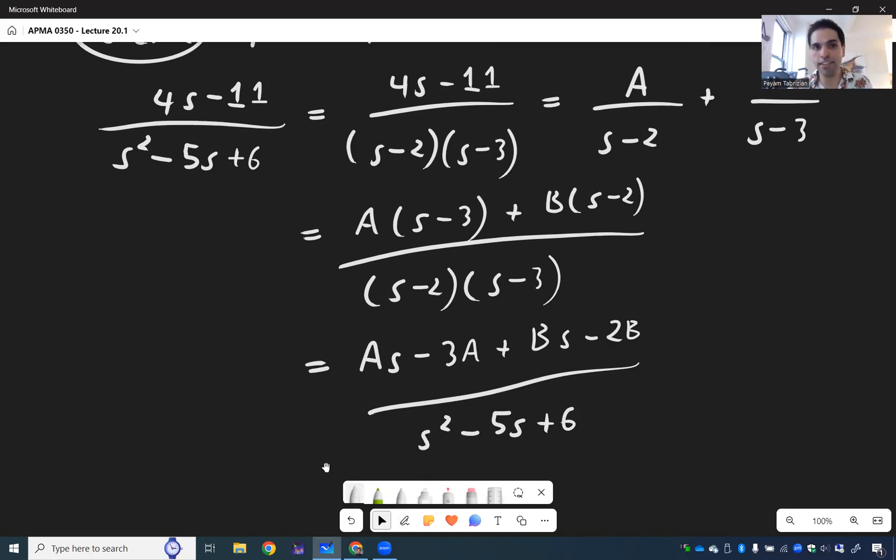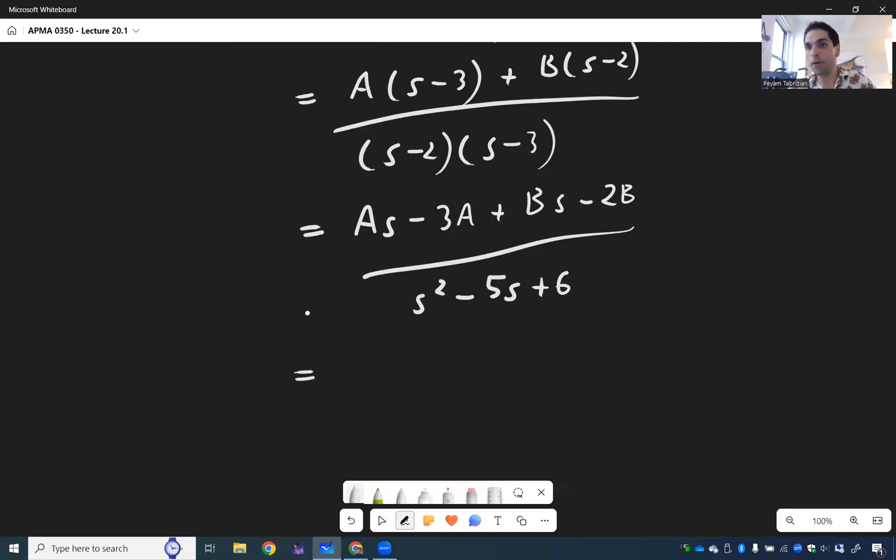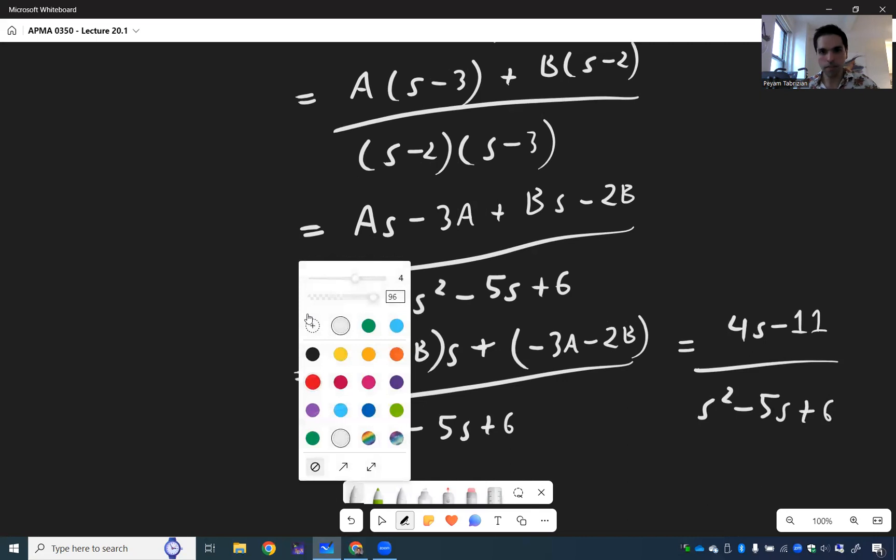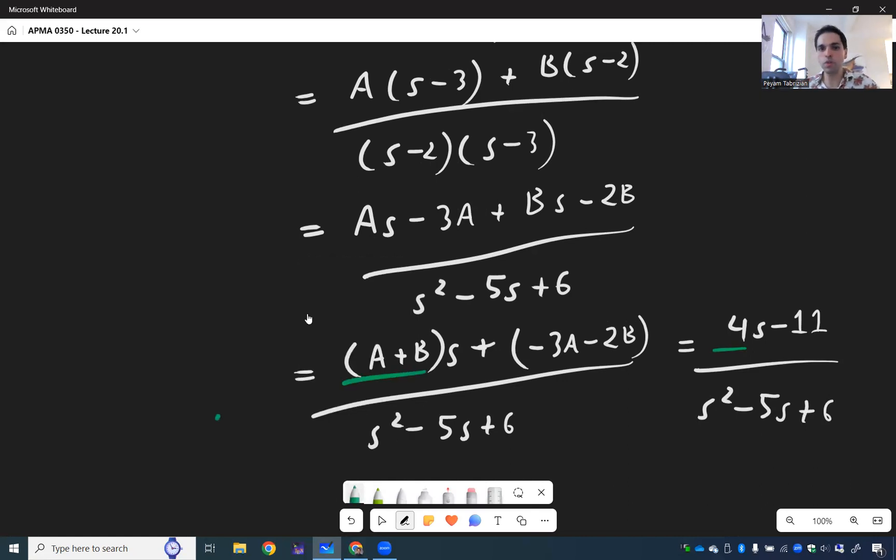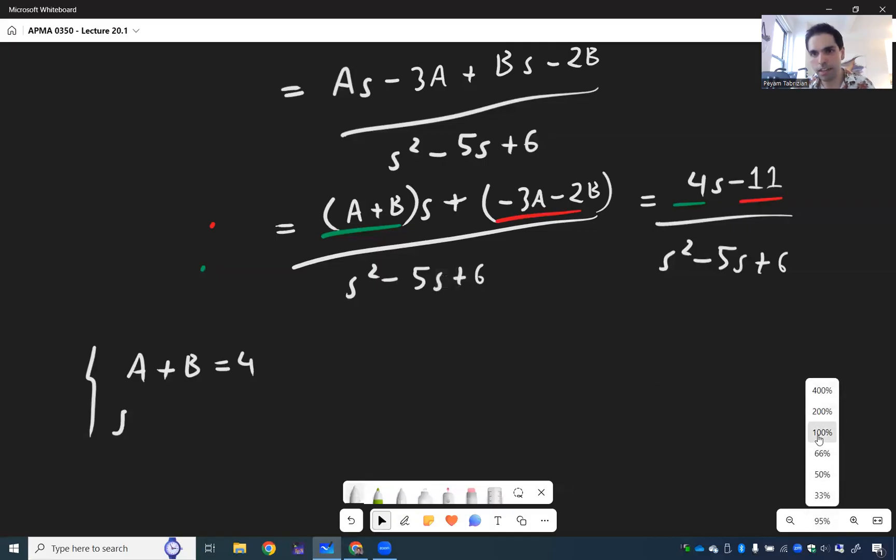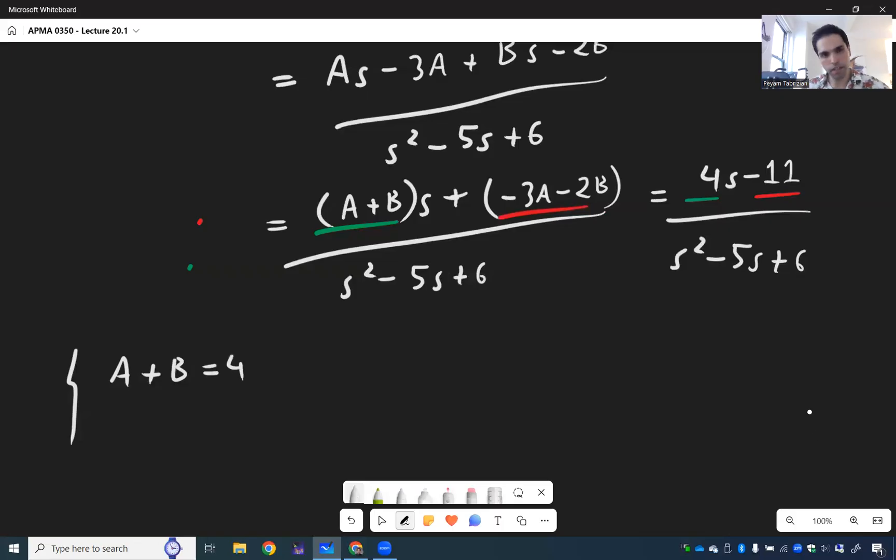So over s squared minus 5s plus 6. And then, on the one hand, we have 4s minus 11. And then the other part, the other numerator, we want to write this as something s plus something. So a plus bs and then minus 3a minus 2b over s squared minus 5s plus 6. And remember, you want this to be 4s minus 11 over s squared minus 5s plus 6. And now the nice thing is, all you need to do is compare the coefficients. So what we then get is a plus b is 4. And then minus 3a minus 2b is minus 11.